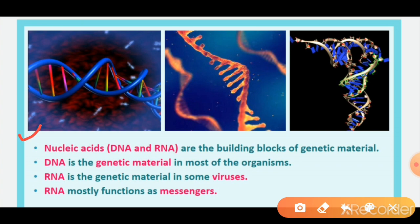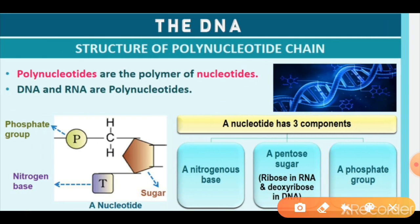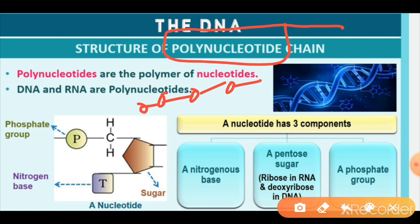Nucleic acids — DNA and RNA — are the building blocks of genetic material. DNA is the genetic material in most organisms. RNA is the genetic material in some viruses. RNA mostly functions as a messenger — carrying the DNA message. DNA is a polynucleotide — many nucleotides are a polymer, many nucleotides linked in a long chain form DNA.